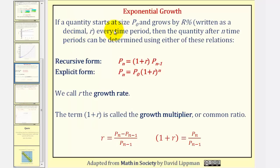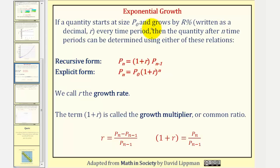To summarize: if a quantity starts at p sub zero and grows by capital R percent — written as a decimal as lowercase r — every time period, then the quantity after n time periods can be determined using either of these two relations. The recursive relationship is p sub n equals the quantity 1 plus r times p sub n minus one. The explicit equation for exponential growth is p sub n equals p sub zero times the quantity 1 plus r raised to the power of n, where r is the growth rate and 1 plus r is called the growth multiplier.